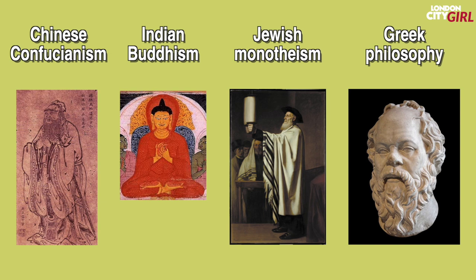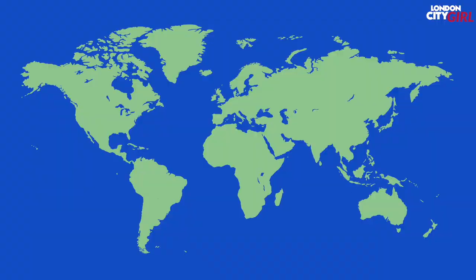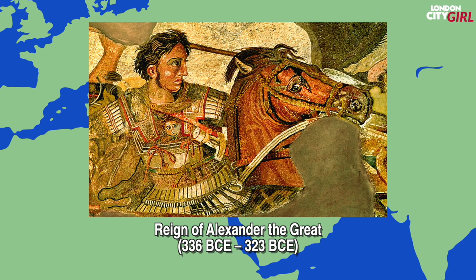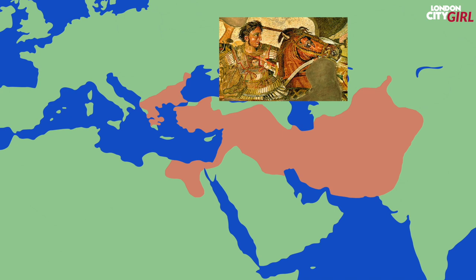In the 5th and 6th century a set of transformative philosophical and religious ideas were developed, notably Chinese Confucianism, Indian Buddhism, Jewish monotheism and Greek philosophy. In and around 550 BCE the Achaemenid empire, also known as the first Persian empire, emerged. The years between 336 BCE to 323 BCE saw the reign of Alexander the Great, the king of the ancient Greek kingdom of Macedonia. He created one of the largest empires of the ancient world which stretched from Greece to northwestern India. His conquest meant a diffusion of ancient Greek culture and influence throughout the region.